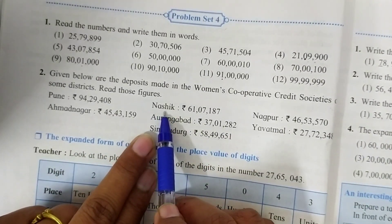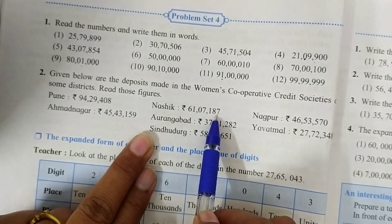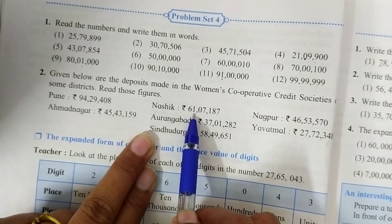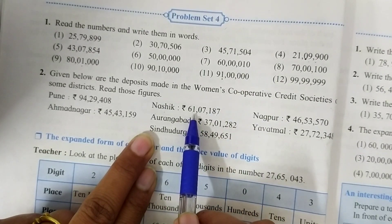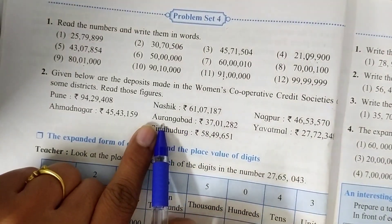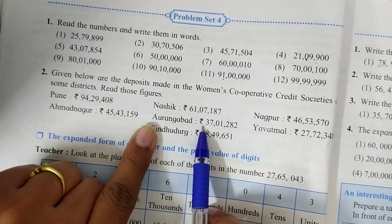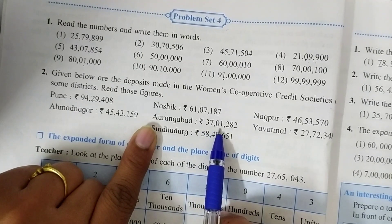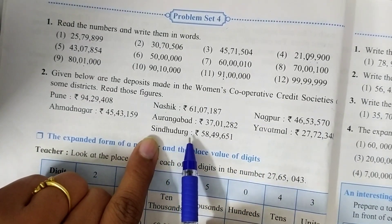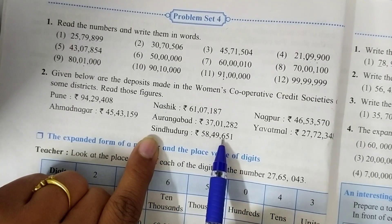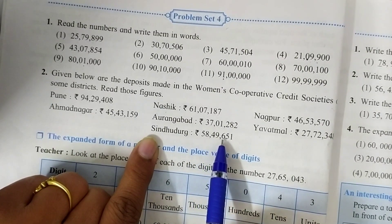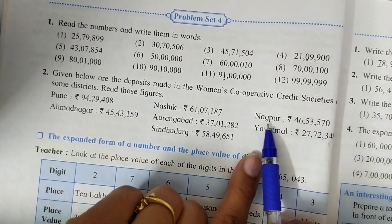Now Nashik: counting tens, hundreds, thousands, ten-thousands, lakh and ten-lakh — it's sixty-one lakh seven thousand one hundred and eighty-seven. Now Aurangabad: thirty-seven lakh one thousand two hundred and eighty-two. For Sindhudurg, counting all places — it's fifty-eight lakh forty-nine thousand six hundred and fifty-one.